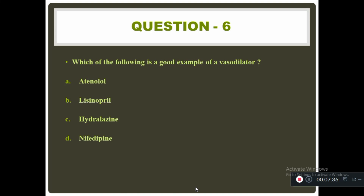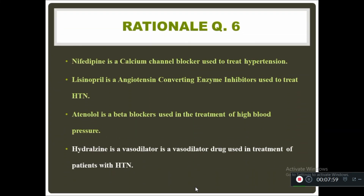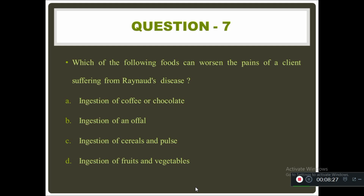Question six: which of the following is a good example of a vasodilator — atenolol, nifedipine, lisinopril, or hydralazine? The answer is hydralazine, which is a vasodilator used in the treatment of patients with increased blood pressure. Nifedipine is a calcium channel blocker, lisinopril is an ACE inhibitor, and atenolol is a beta blocker — all used to treat hypertension.